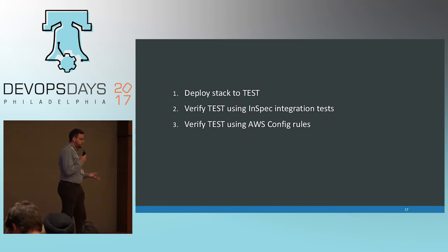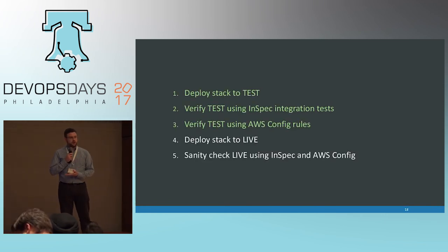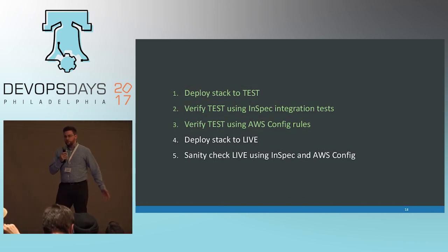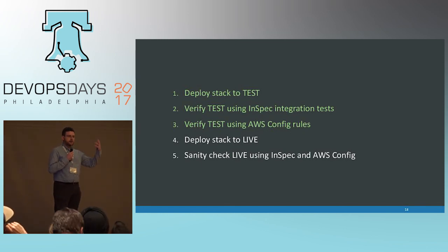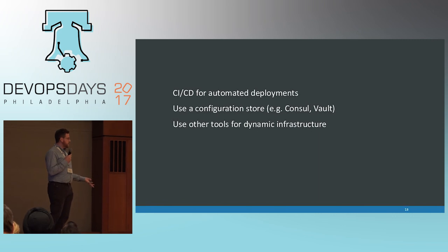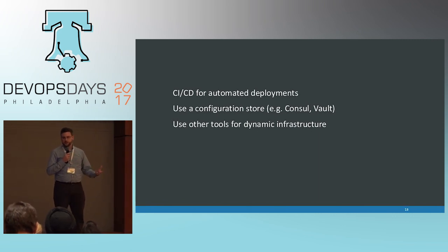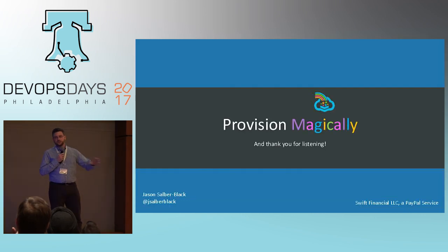A workflow for this: we make changes to our SparkleFormation template, that goes through the CLI tool, generates new CloudFormation templates, those get pushed to Amazon into the test space, we run integration tests and whatever other checks we want. This whole process can be automated and pushed through live environments just like application code. It integrates very nicely with a CI/CD solution and can integrate with a configuration store like Consul or Vault — separate from all other dynamic infrastructure for which we have other tools to deploy into those networking spaces.